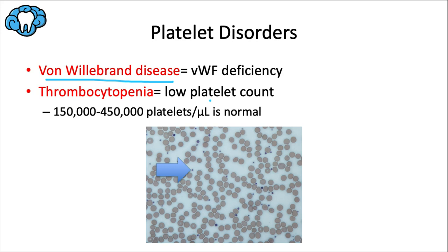Thrombocytopenia refers to low platelets. It's not technically a diagnosis but rather the result of another disease or etiology — it can be drug-induced, like drugs toxic to the bone marrow, or immune-mediated, related to leukemia or HIV. A normal platelet count is between 150,000 and 450,000 per microliter of blood. Below that is thrombocytopenia. You have increased clinical bleeding below 50,000, and spontaneous bleeding below 20,000.